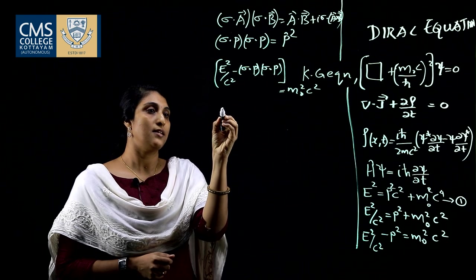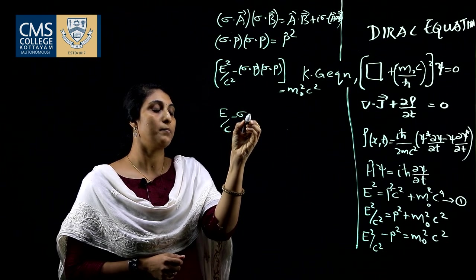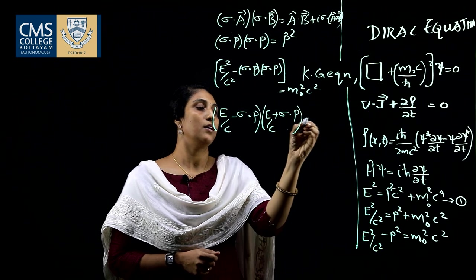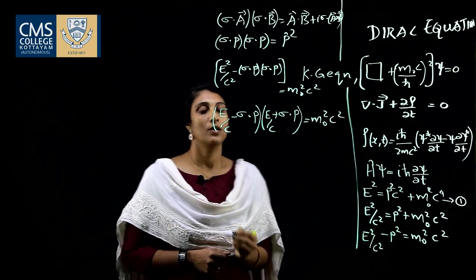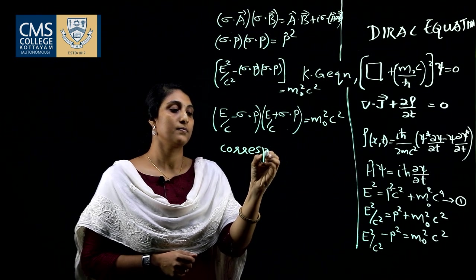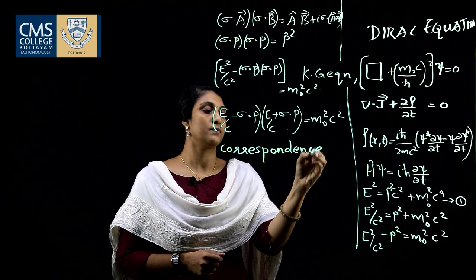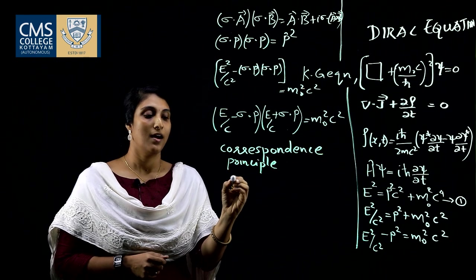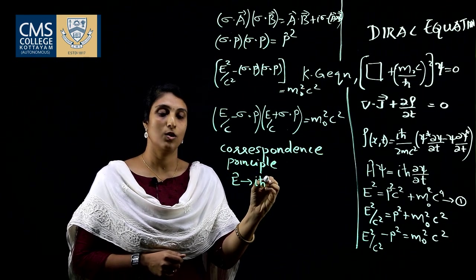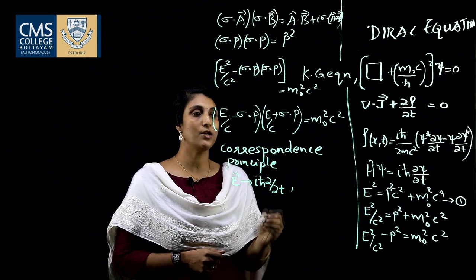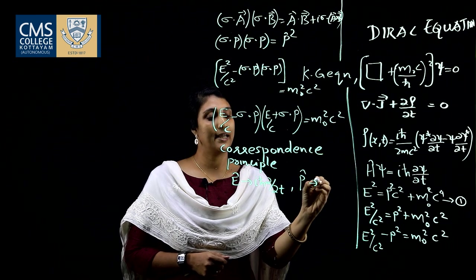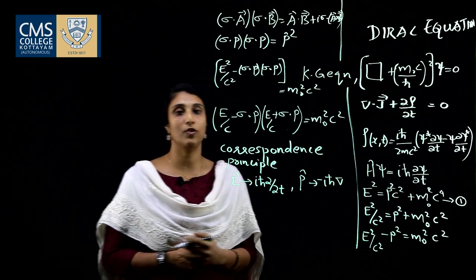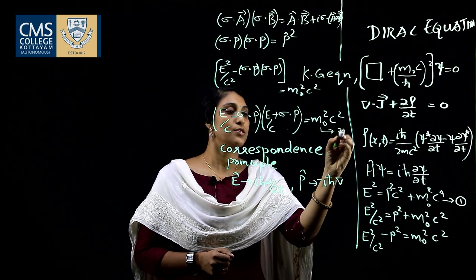Using the correspondence principle, the energy E can be replaced, and the equation becomes (E/c − σ·p)(E/c + σ·p) = m₀²c². The energy operator can be replaced by iℏ ∂/∂t and the momentum operator by −iℏ∇. We introduce the wave function φ for the operators to act upon. This equation is marked as equation number 2.